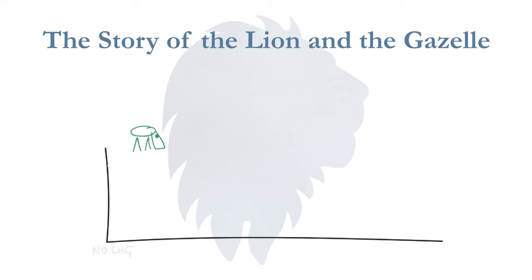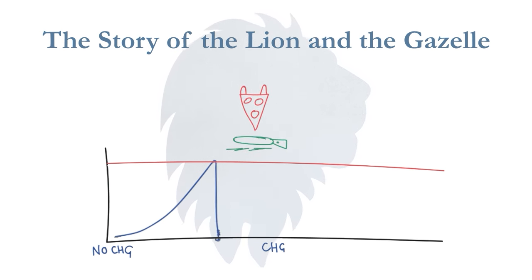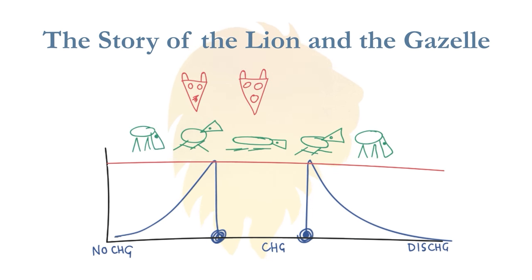From left to right, we have a gazelle at the watering hole with a relaxed nervous system. A lion arrives, and the gazelle is activated into fight or flight. The lion catches the gazelle and is about to eat it, so the gazelle goes over the red line and freezes. The lion is distracted from his kill, and so the gazelle survives, which triggers the discharge of its stored-up activation. The gazelle returns to rest and goes back to the watering hole. The discharge can be over in a minute or two, and the gazelle's nervous system returns to rest, homeostasis, as if nothing has happened.